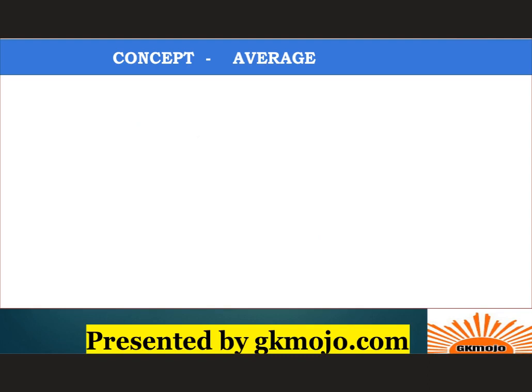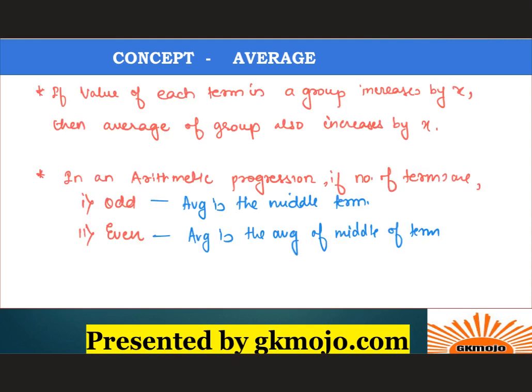Now we'll see some important pointers with respect to an average. This will help you solve your questions quickly. If the value of each term in a group increases or decreases by X, then the average of that group also increases or decreases by X. What this means is: let's suppose there is a group with elements X1, X2, X3, X4, X5. If I decrease each element by A, then the average will also decrease by A. If I increase it by A, the average will also increase by A. So it has a comprehensive effect on the average.